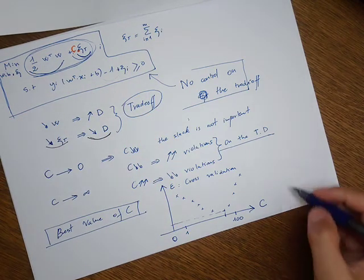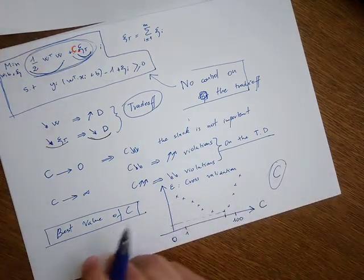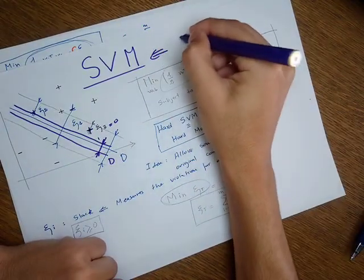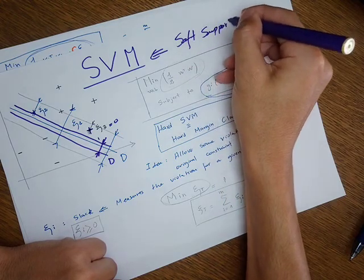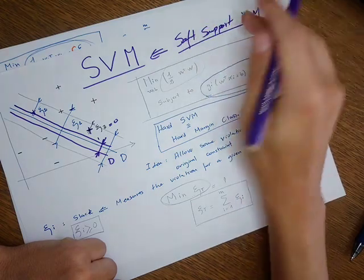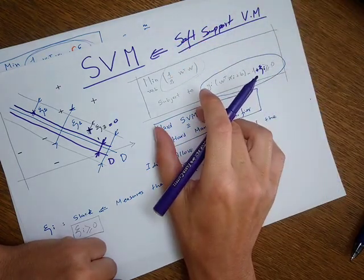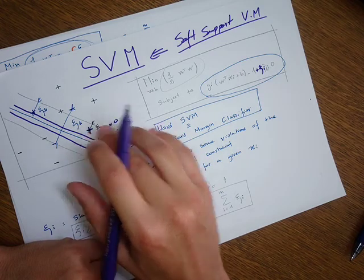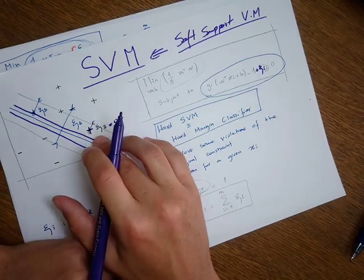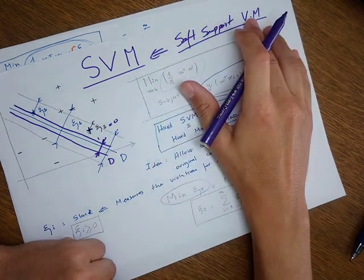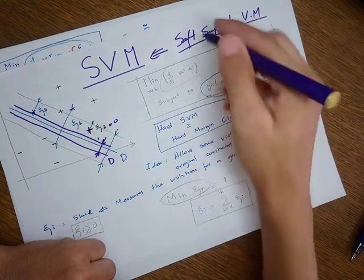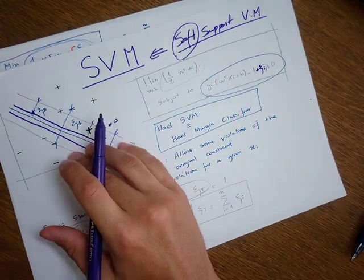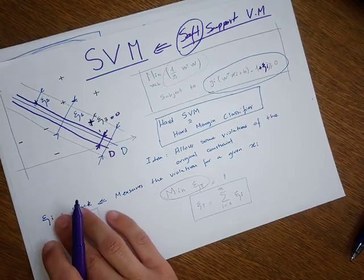What I've been talking about so far is called the soft support vector machine. The difference between the soft SVM and the hard SVM is that in the hard SVM all training samples must be correctly classified — no violations are tolerated. In the soft SVM, we tolerate some violations, which is why we call it 'soft.' This works better in practical cases when we have an overlap between training samples of different classes.